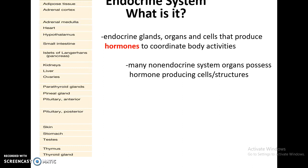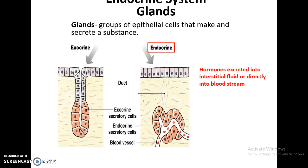The endocrine system is basically a collection of glands, organs, cells, etc. that all do one thing — they all produce hormones. These hormones often coordinate many important body activities. There are also additional hormone-producing cells and structures in other organs considered parts of other systems.